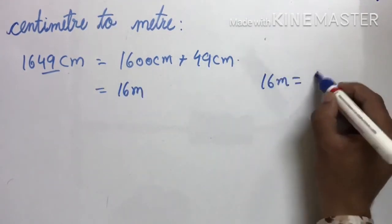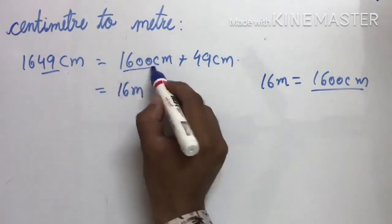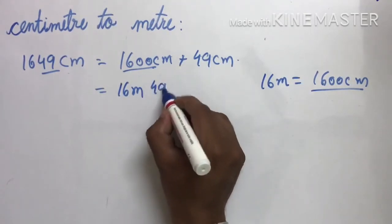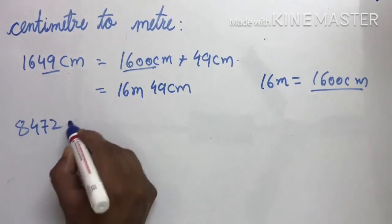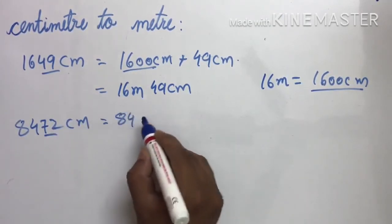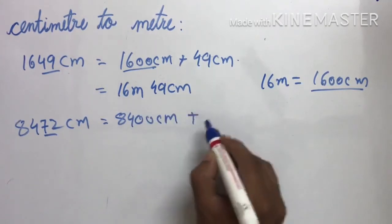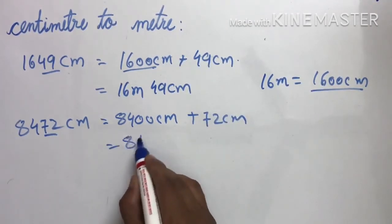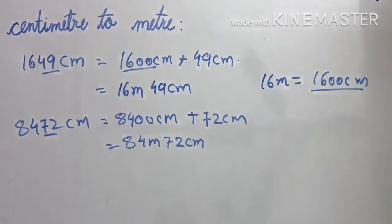पीछे के दो number 00 करना है। 16 meter हो वो 1,600 cm होता है। तो उसकी जगह पर हम 16 meter लिख सकते हैं और 49 cm. तो यह दो को 0 करो — 8,400 cm plus 72 cm. तो यह कितने meter होगा? 84 meter और 72 cm. Understood?